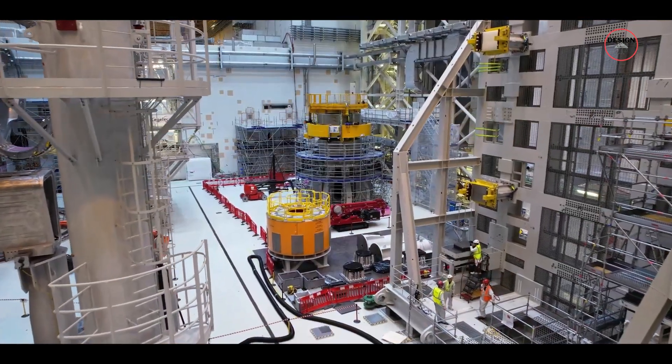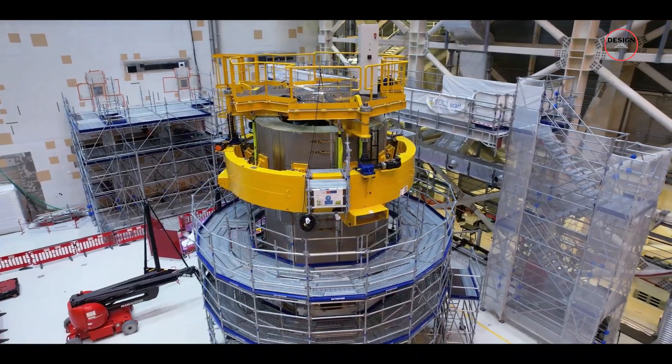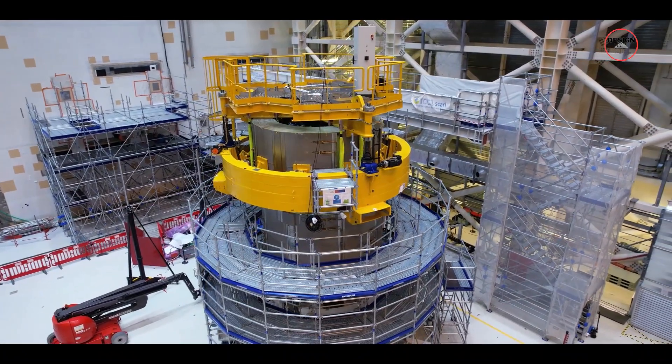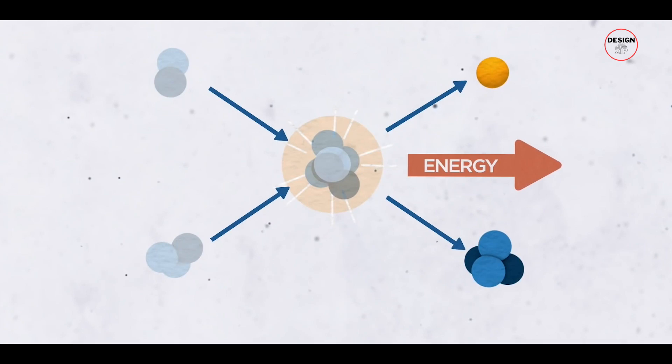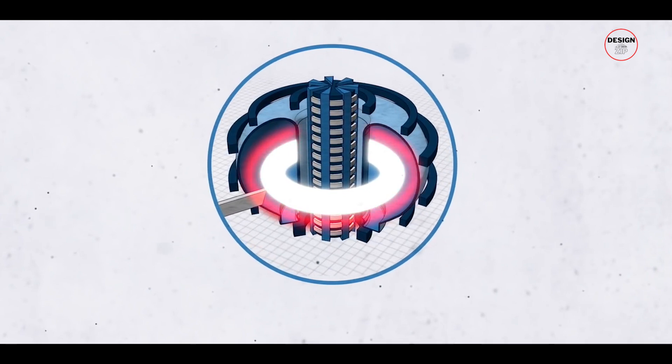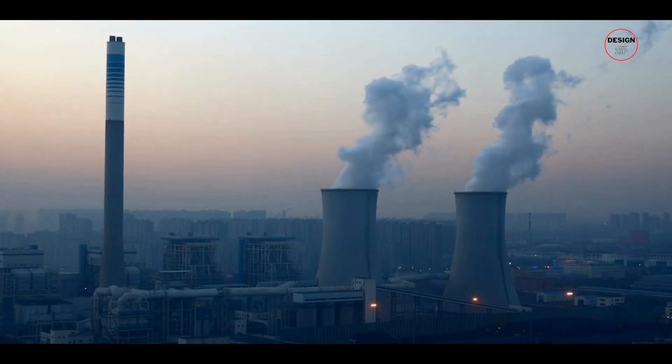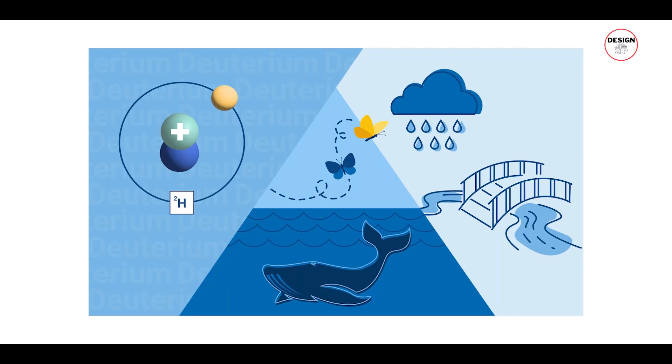What makes ITER truly amazing is its potential to produce massive amounts of energy from a very small amount of fuel. For example, just one gram of a deuterium-tritium fuel mixture used in nuclear fusion can create 90,000 kWh of energy. To put that in perspective, that's equivalent to burning 11 tons of coal.